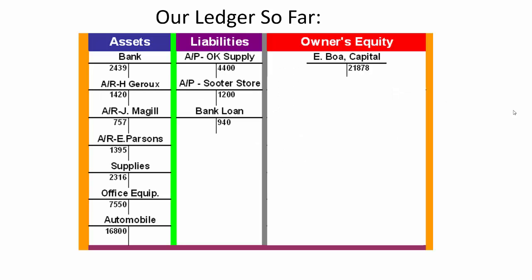Thinking about our work so far, we have had a lot of work around understanding the basic accounting equation. We understand about assets - things that we can own, buy, sell, trade. Liabilities, hopefully being money that we owe to other people. And then we have this idea of owner's equity, representing the value of the owner's investment or residual value.